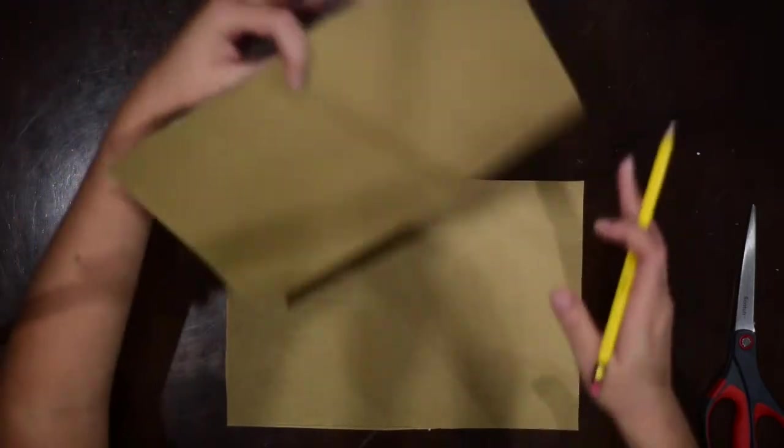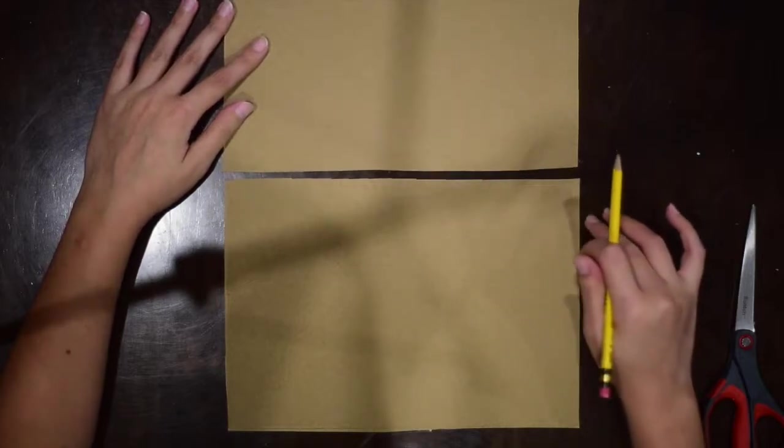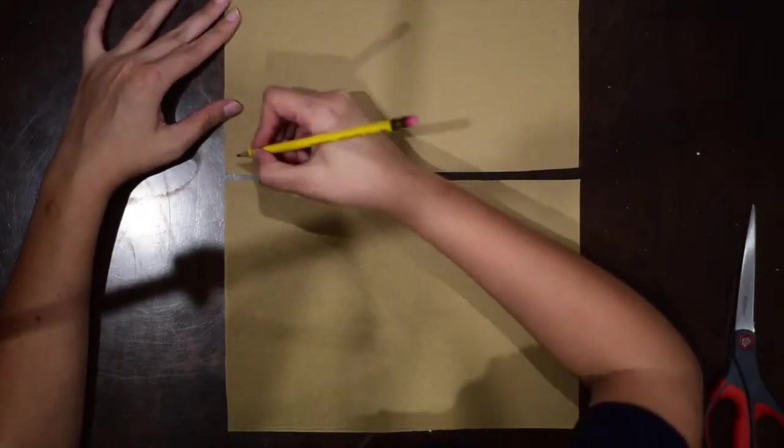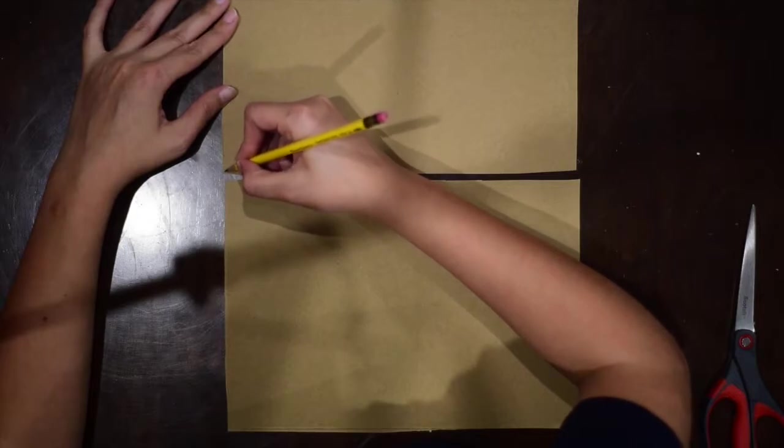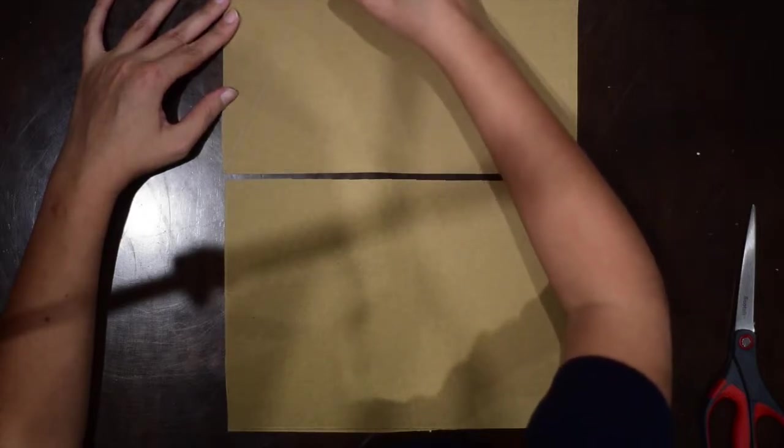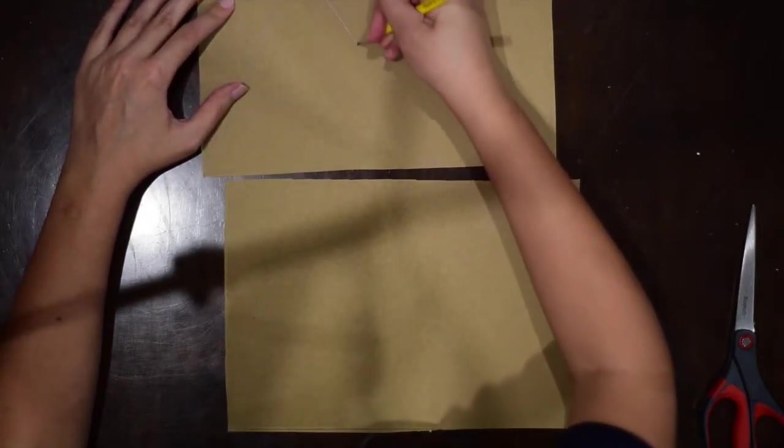And now, I'm going to trace the shape of the roof that I want, I'm going to trace it here so I can cut it. So, I'm going to make a triangle, a big triangle.